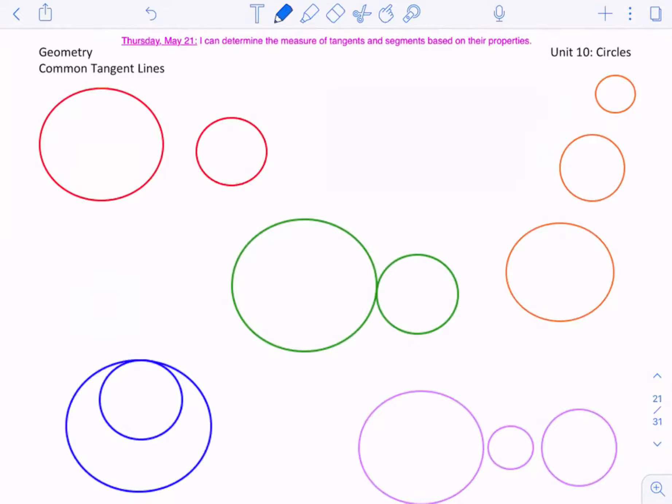A tangent line, do you remember Ms. Murphy? A tangent line touches a circle only once. So it touches a circle once, only once. So if I have a circle, a tangent line would look something like this. There is my tangent line, and there's only one touching point.